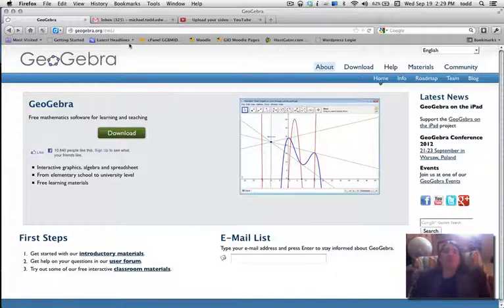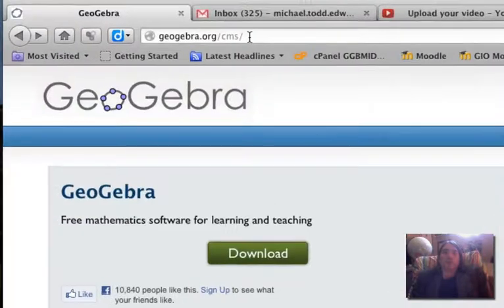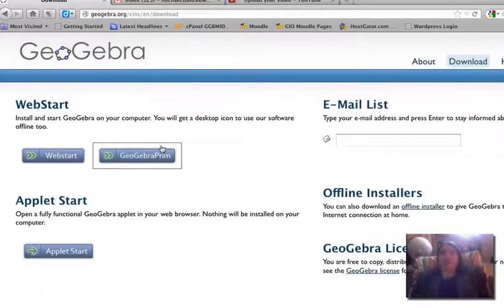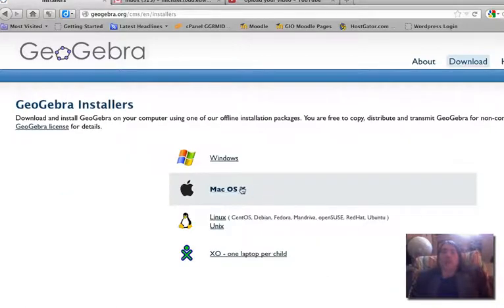To begin, you're going to go to the GeoGebra.org website and click the download button. We're going to make sure that you have GeoGebra installed on your computer. From here, we're going to pick the offline installer option and click on the link that corresponds to the operating system that you use. I use a Mac, so I'm going to click on this link.